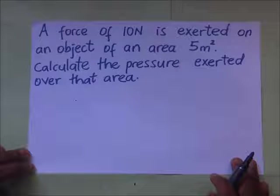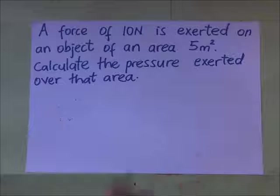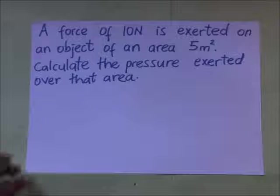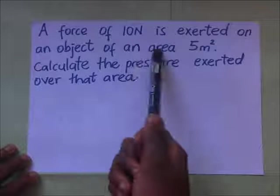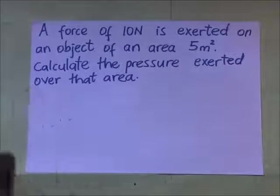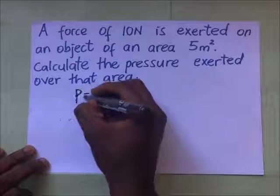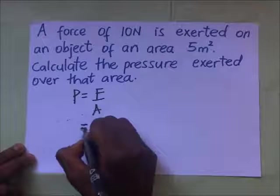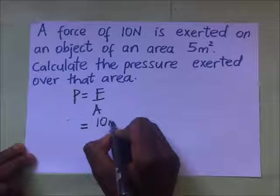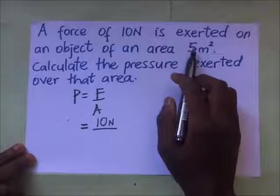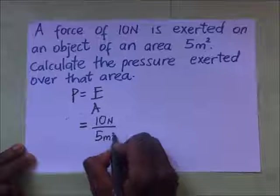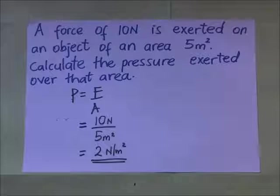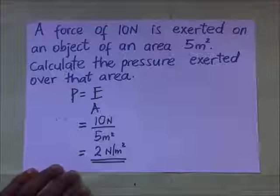In our previous question we had a box with a face that had a certain area we had to first calculate. Here we've been given the area of the face directly as 5 meters squared, and the force. To calculate the pressure: pressure equals force over area. The force is 10 Newtons divided by the area of 5 meters squared, so our answer is 2 Newtons per meter squared as our pressure, which can also be written as 2 Pascals.